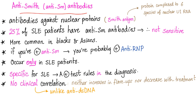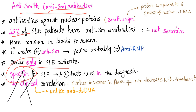Anti-Smith antibodies: very specific for lupus, but not sensitive at all. Only lupus patients can have a positive anti-Smith antibody. Unlike anti-double-stranded DNA, anti-Smith does not correlate with disease activity.